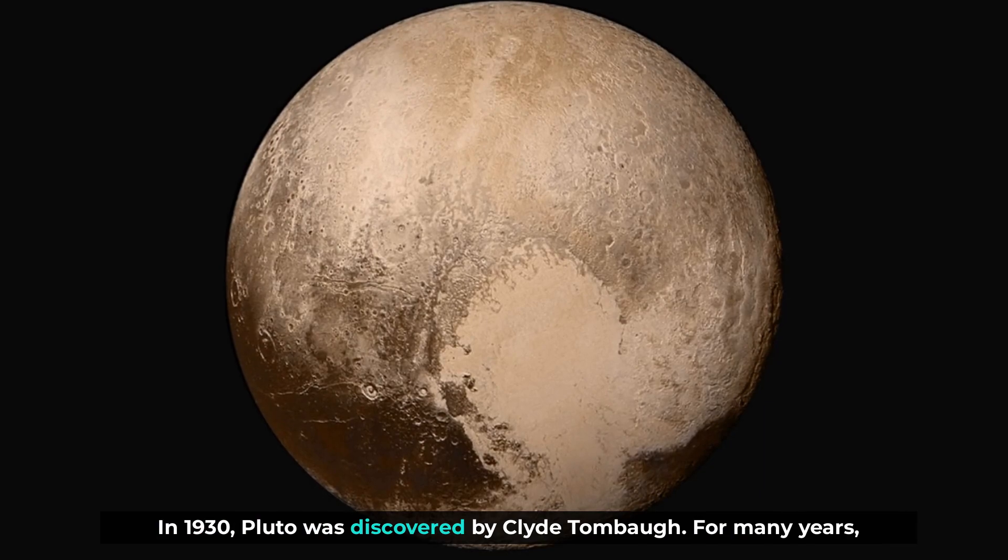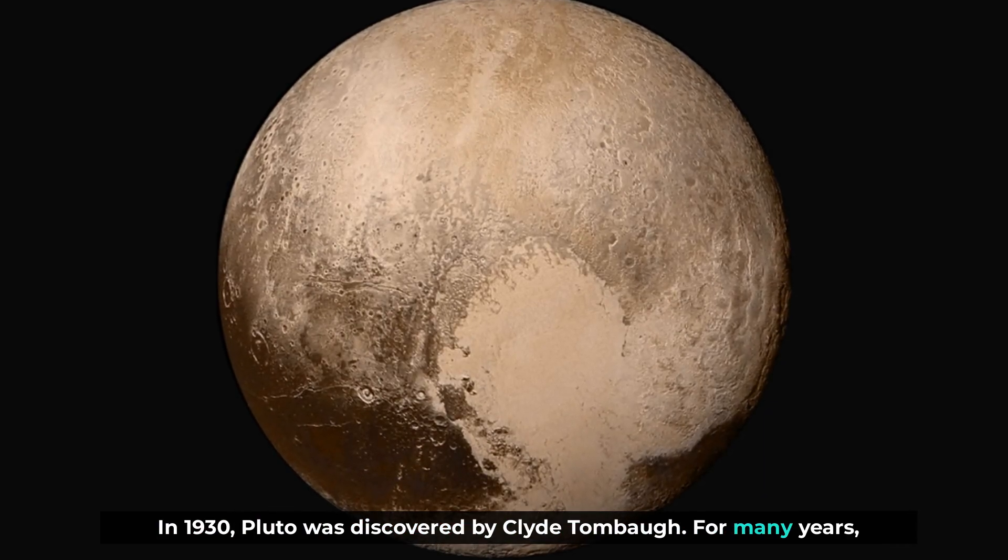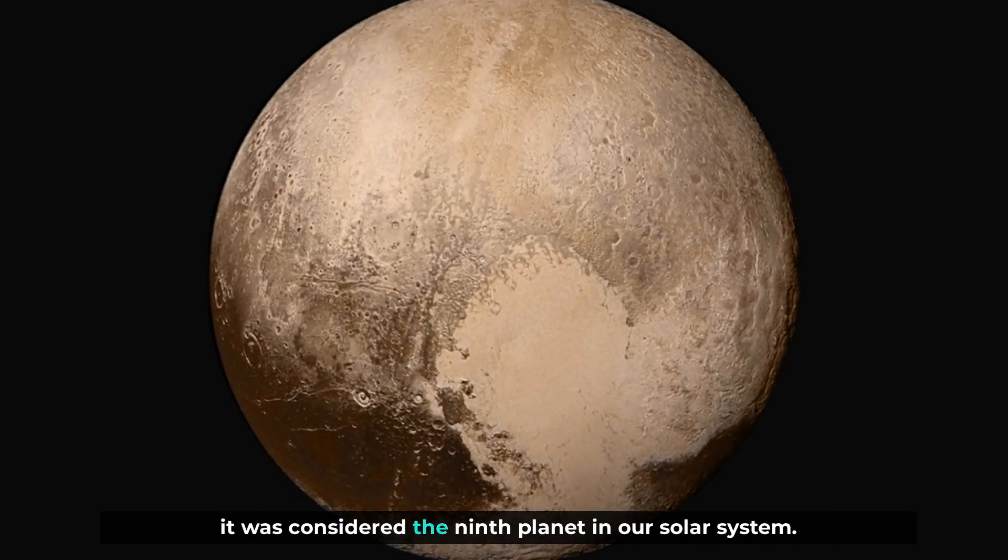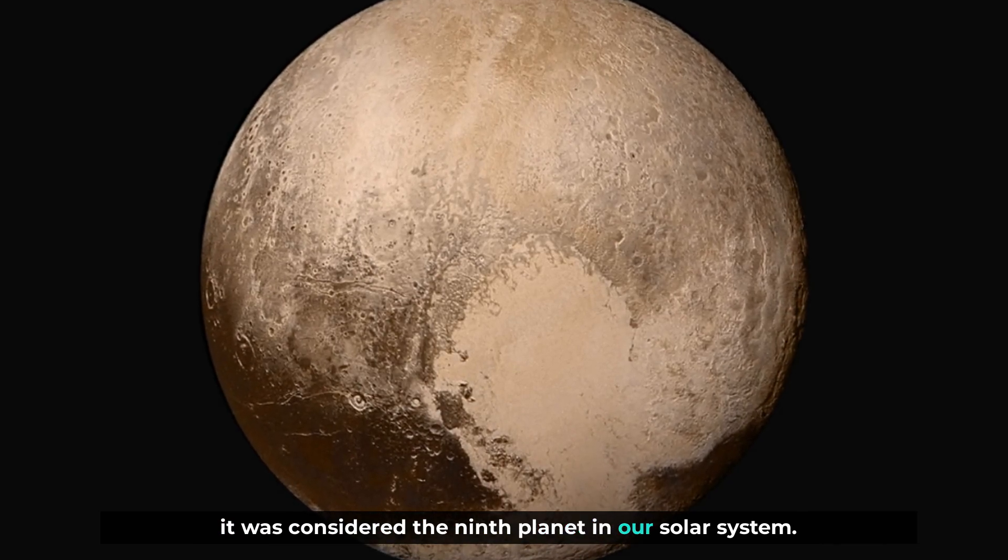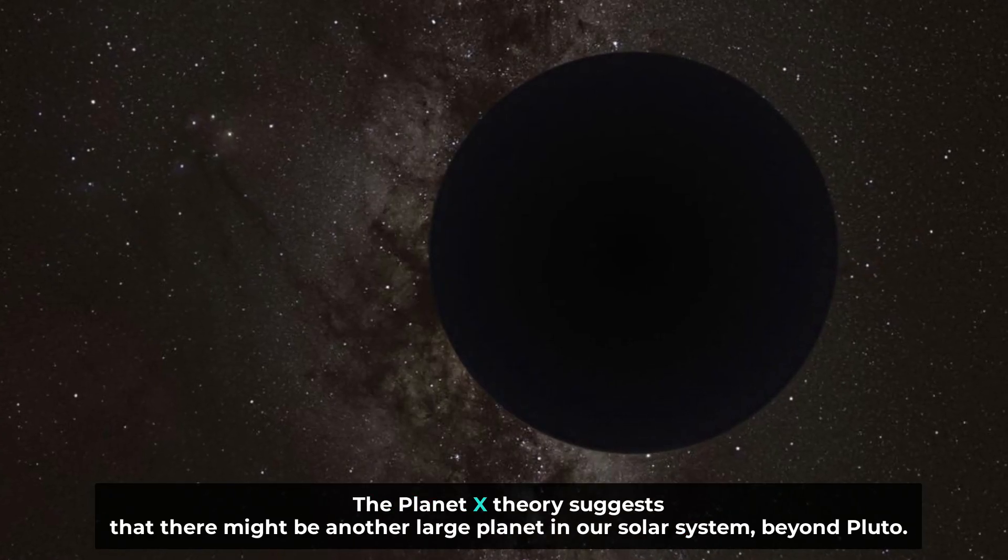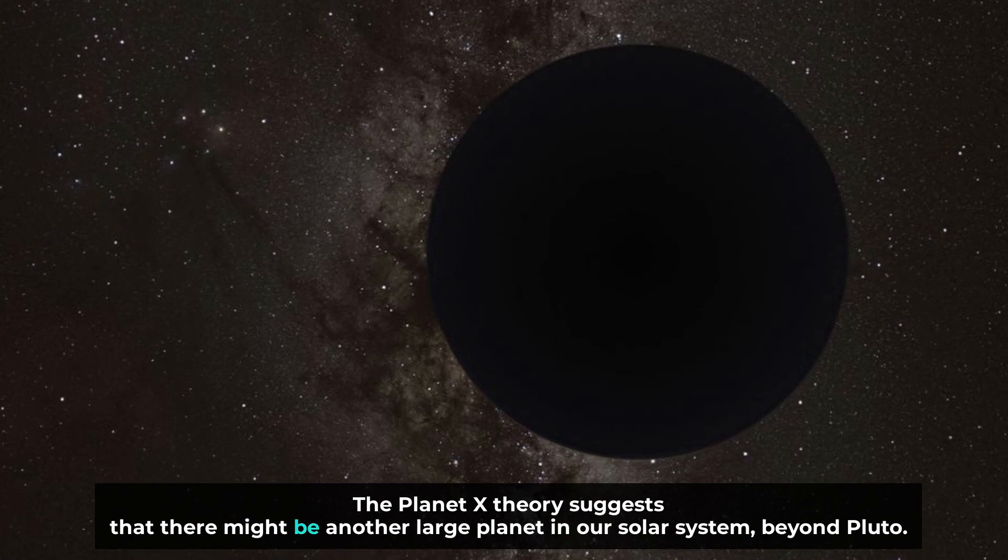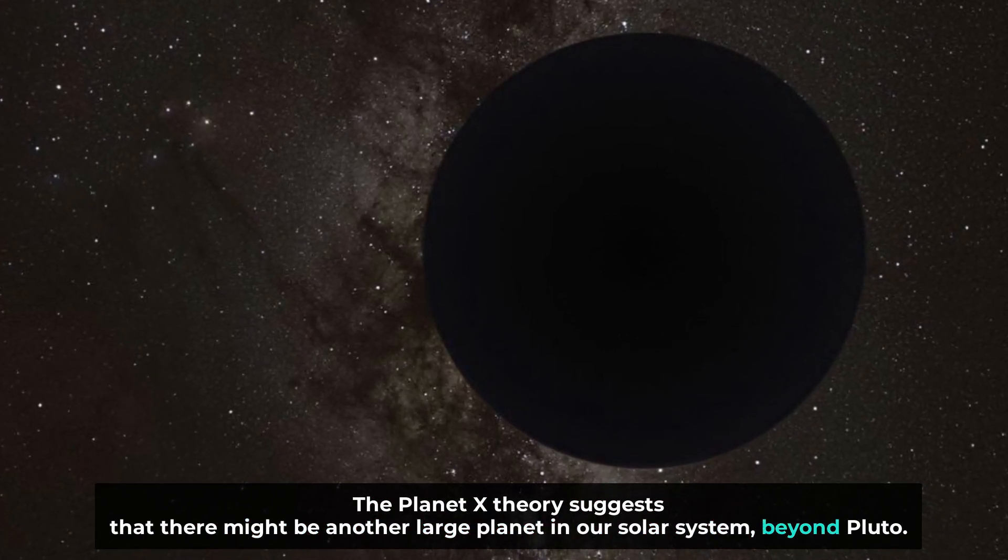In 1930, Pluto was discovered by Clyde Tombaugh. For many years, it was considered the ninth planet in our solar system. The Planet X theory suggests that there might be another large planet in our solar system, beyond Pluto.